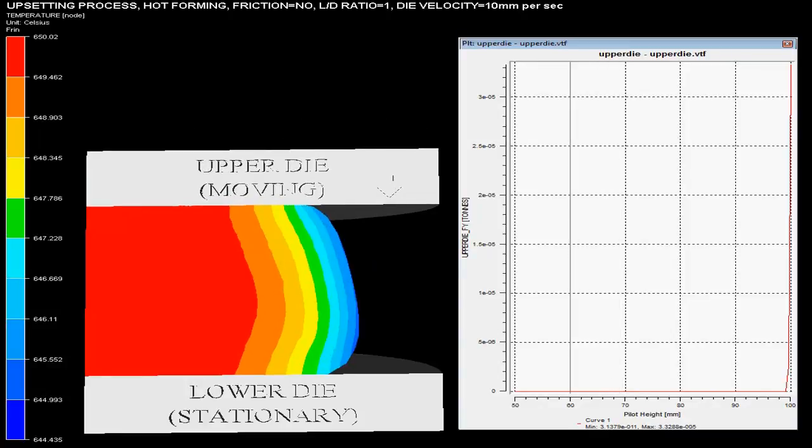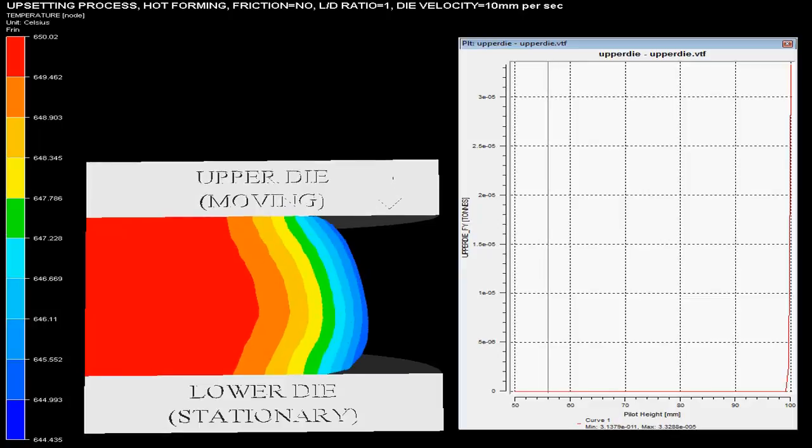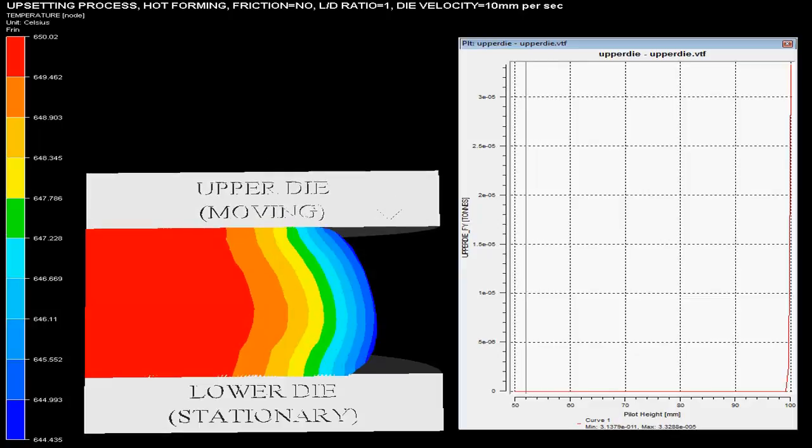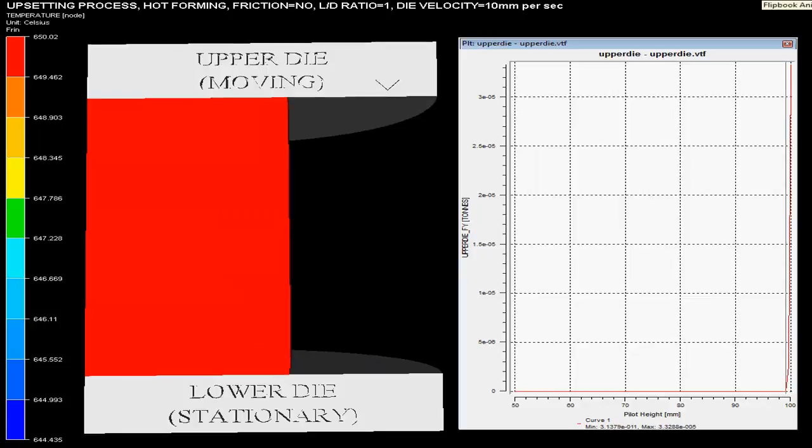On the right hand side, one could see a graph of forging force on upper die versus billet height showing the forging force evolution during upsetting process for 50% deformation.